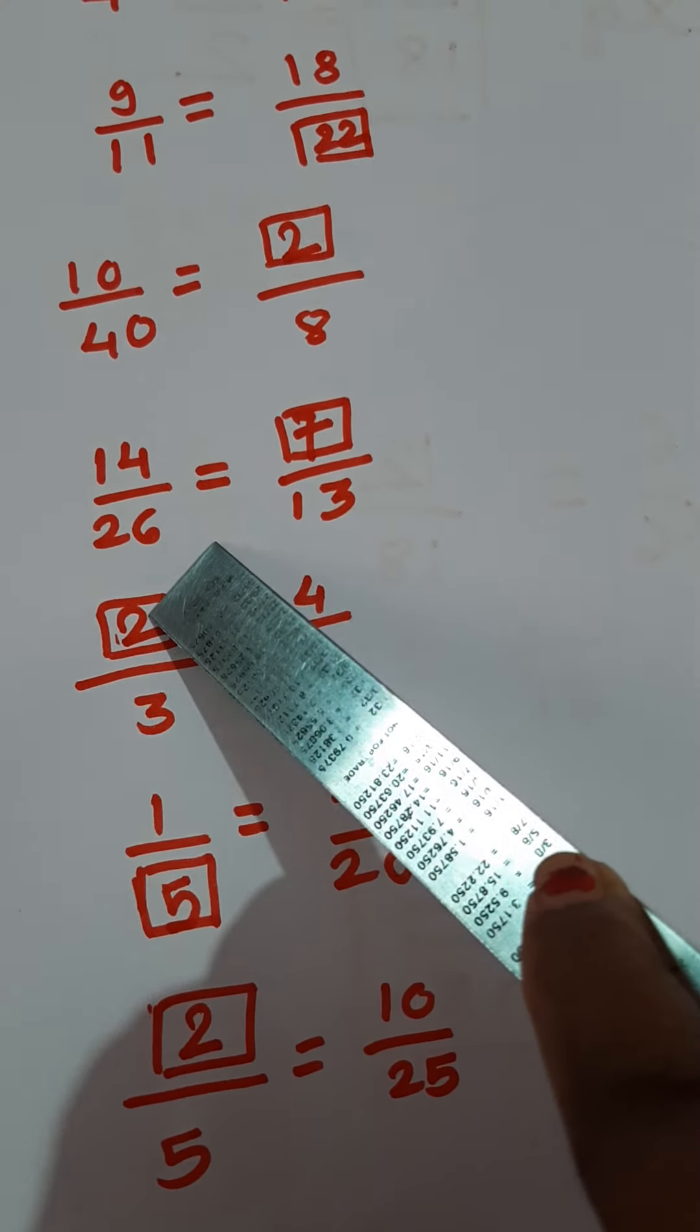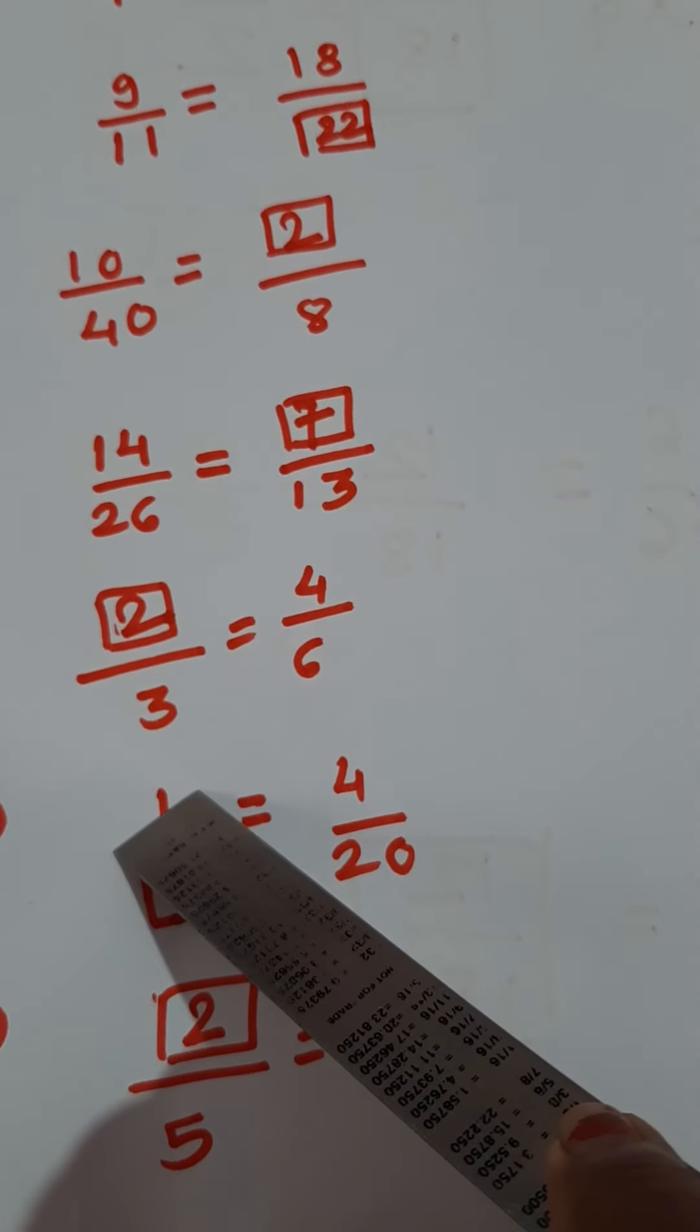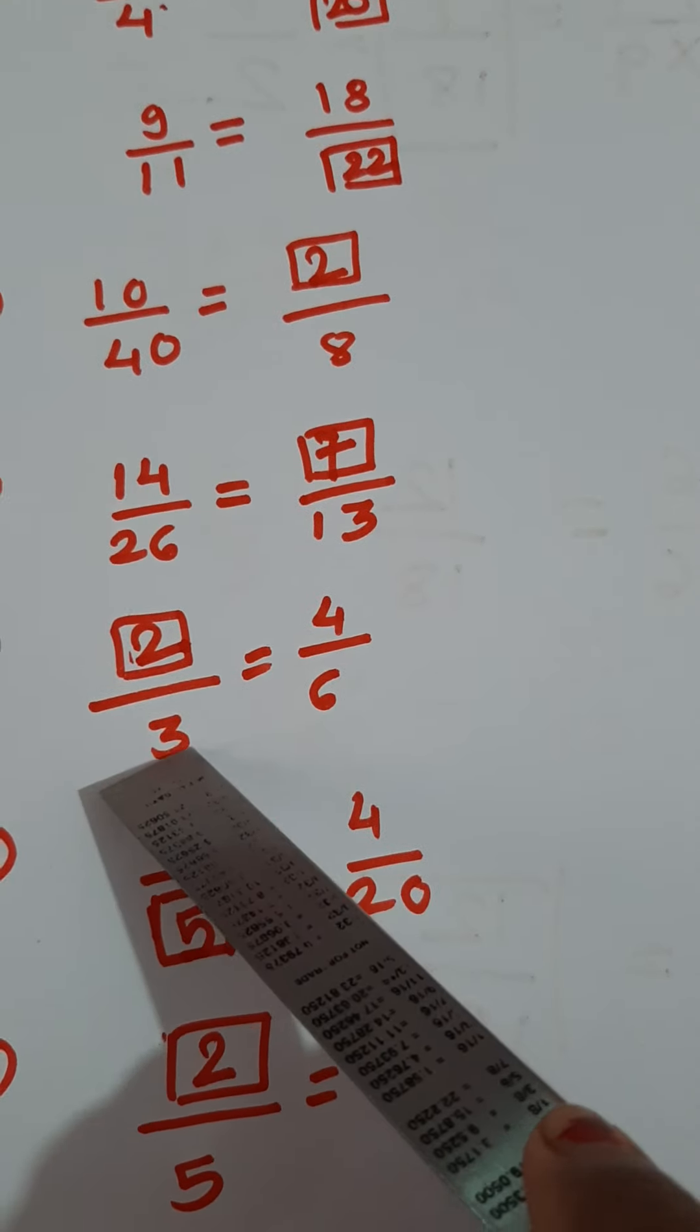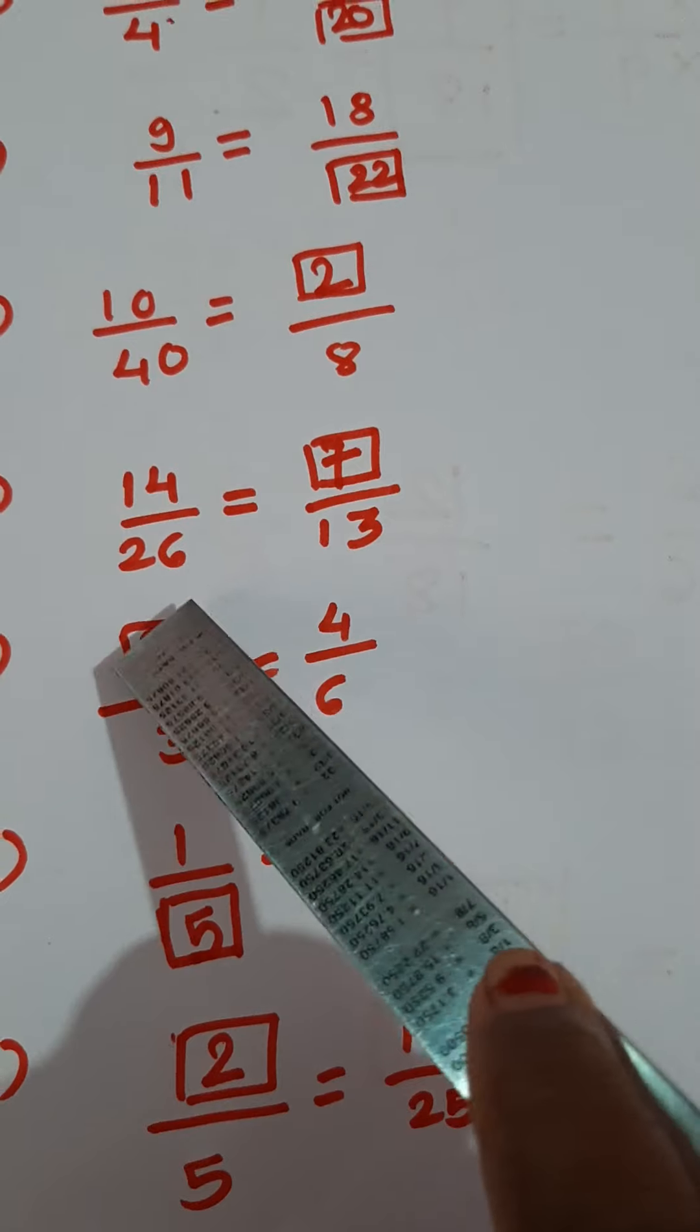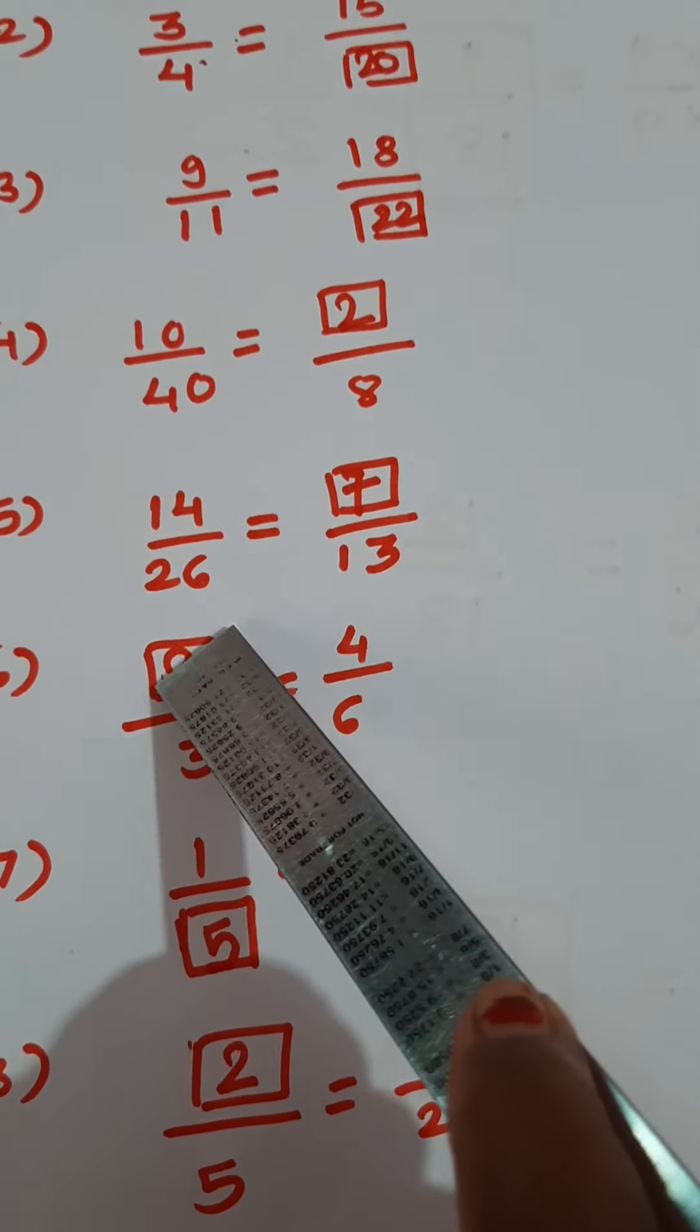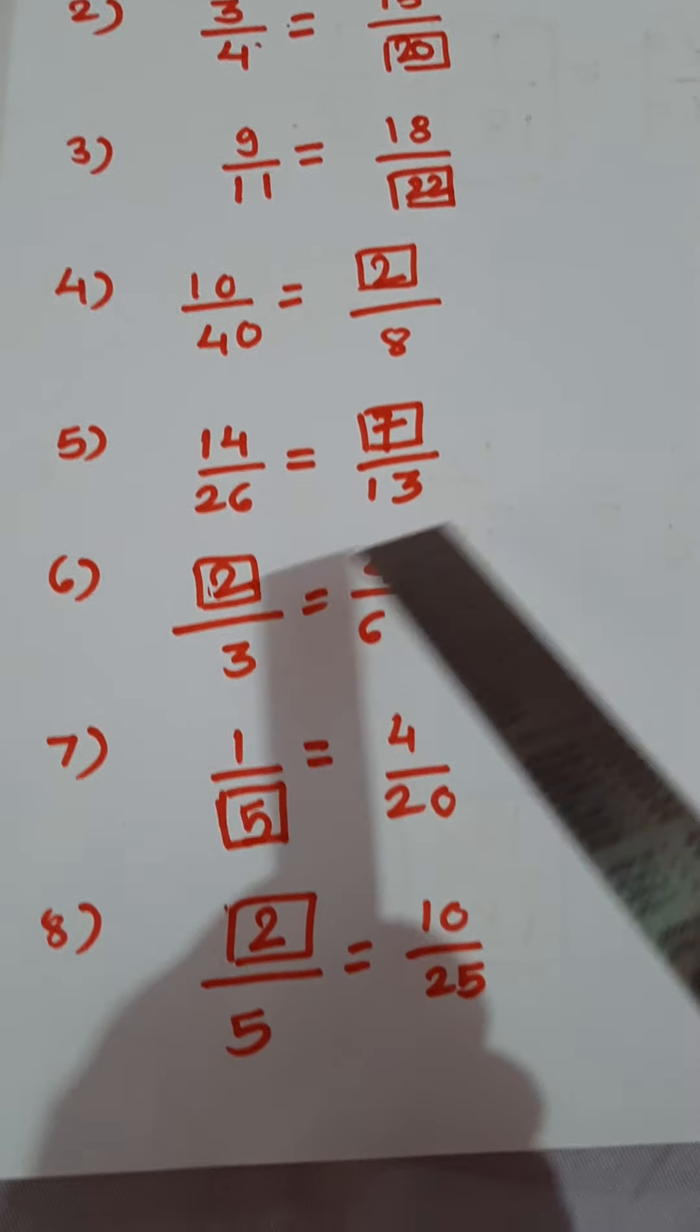Similarly here, dash upon 3 is equal to 4 upon 6. 3, 2's are 6. So 2, 2's are 4.